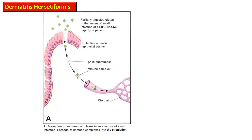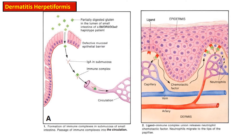Dermatitis herpetiformis develops when there is partially digested gluten in the lumen of the small intestine of B8, DR3, and DQW2 haplotype patients. This partly digested gluten travels through the defective mucosal epithelial barrier and binds to IgA in the submucosa. Immune complexes are formed and taken into the circulation, where they bind with ligands present just below the lamina densa of the basement membrane zone.